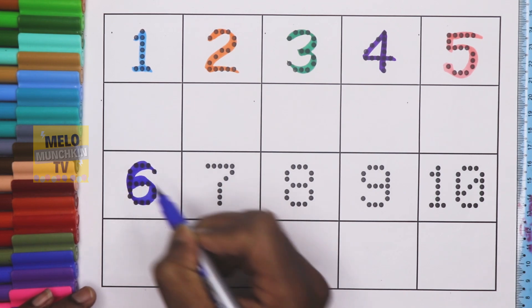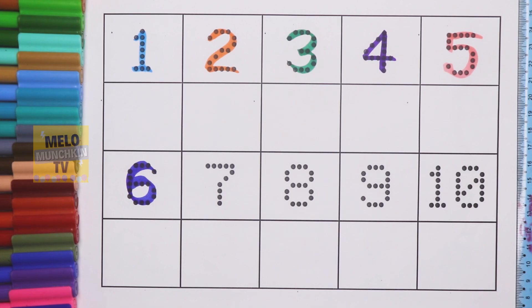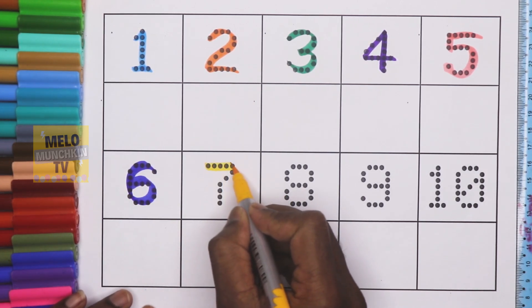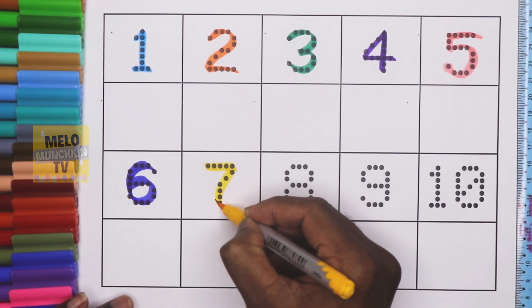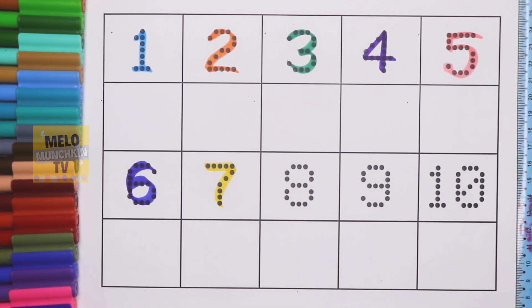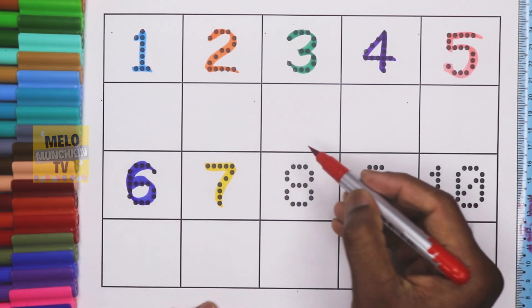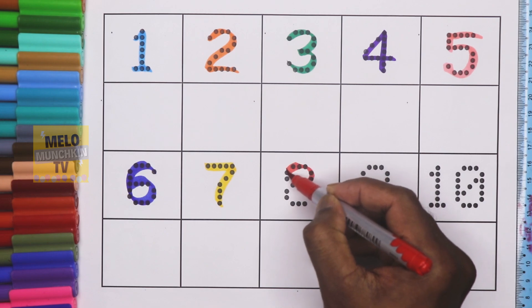Okay, next I'll take yellow color to write number 7, S-E-V-E-N, 7. This is number 7. Now I'll take red color, see this is red color, to write number 8. See how I am writing number 8, E-I-G-H-T, 8.